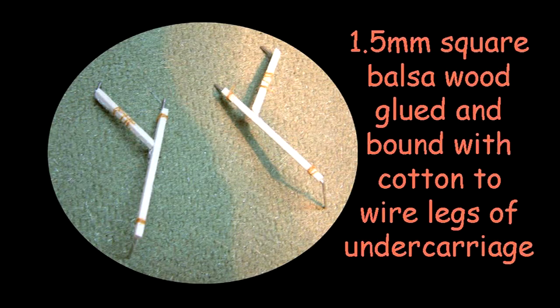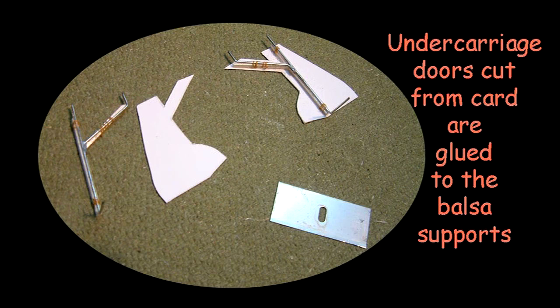The cotton bindings are glued over with balsa cement and the panels, which are cut from card, are then glued in place.